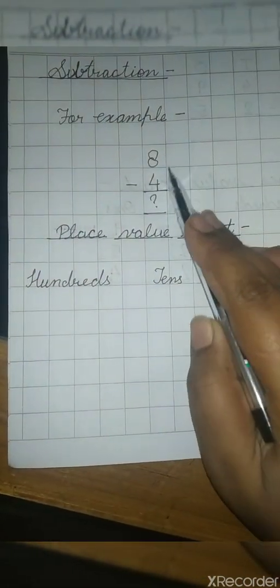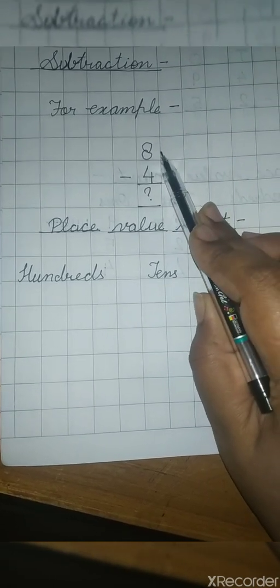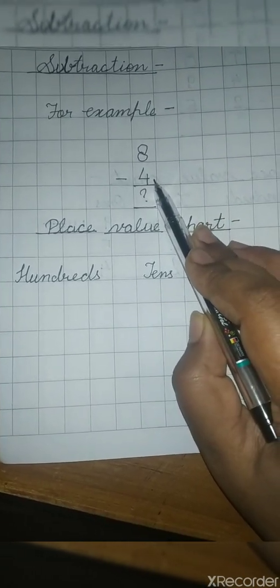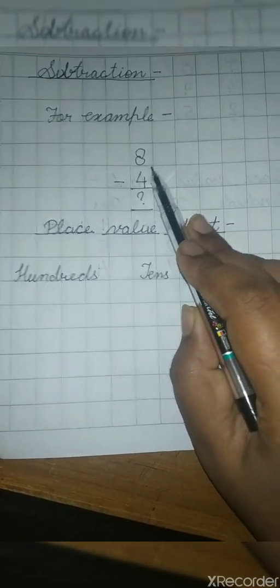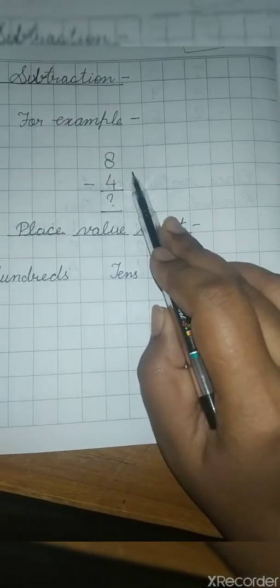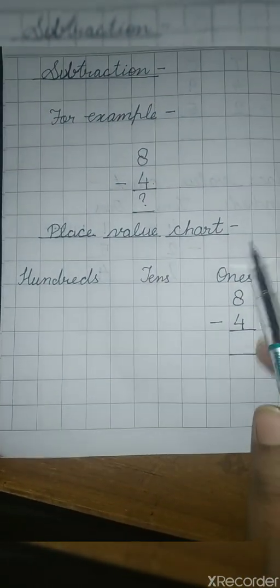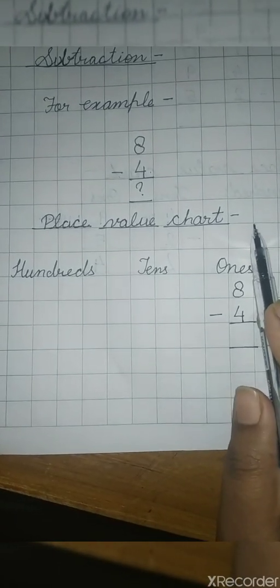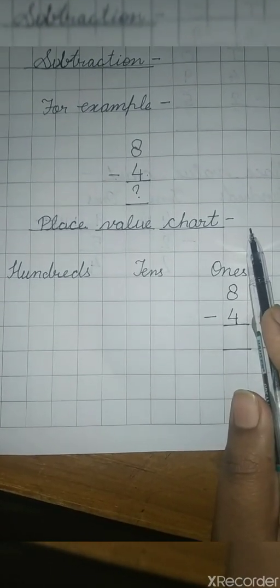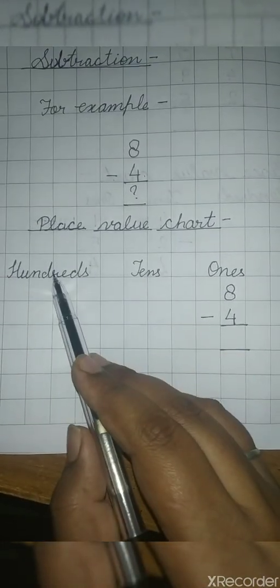Subtraction — for example, this is a one-digit subtraction. The numbers are 8 and 4. This is the symbol of subtraction: 8 minus 4. To solve this problem, we will make a place value chart. For making the place value chart, we will write the names of three places: Ones, Tens, and Hundreds.